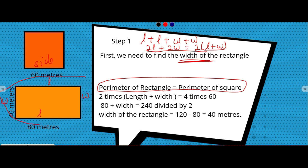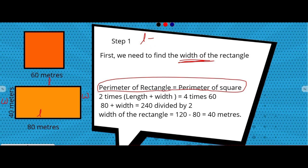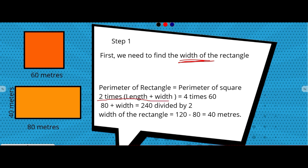Since the perimeter of the rectangle equals the perimeter of the square, we can write: 2 times (length + width) = 4 times side of the square. The side of the square is given as 60 meters, so substituting: 2(L + W) = 4 × 60 = 240.